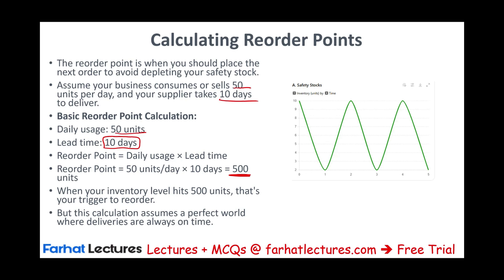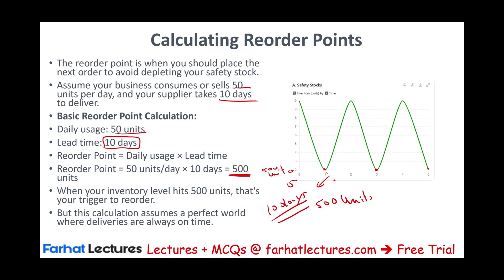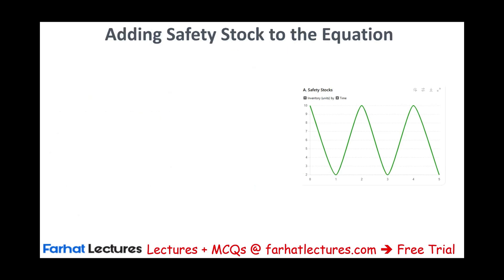But this calculation assumes a perfect world where deliveries are always on time. Think of it this way: as soon as you reach 500 units, you reorder. You still have 500 units remaining because over those 10 days you'll consume them, then receive more inventory. However, this assumes there will be no delays whatsoever during those 10 days. Now we are going to add safety stock to the equation — you really don't want only 500 units; you want a little bit extra.